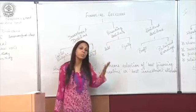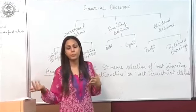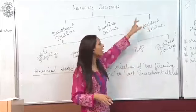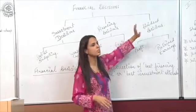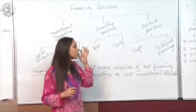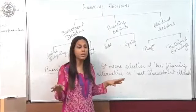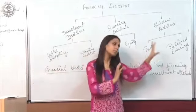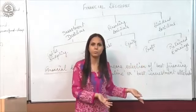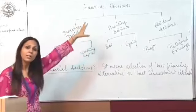Once we have made the investment decisions — whether in plant, machinery, fixed capital, or current assets — we have to take decisions regarding dividend decisions. Dividend decisions mean what part of profit is to be shared among the shareholders, or what amount we have to keep as retained earnings for future or reinvestment purposes. Such decisions are called financial decisions.